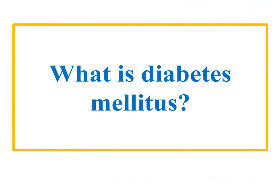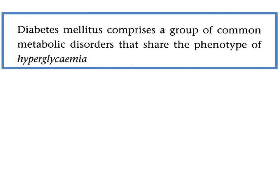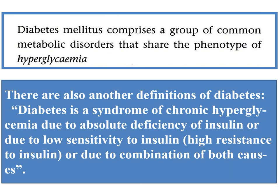What is diabetes mellitus? Diabetes mellitus comprises a group of common metabolic disorders that are the phenotype of hyperglycemia. There are also other definitions. For example, diabetes is a syndrome of chronic hyperglycemia due to absolute deficiency of insulin, or due to low sensitivity to insulin, or high resistance to insulin.